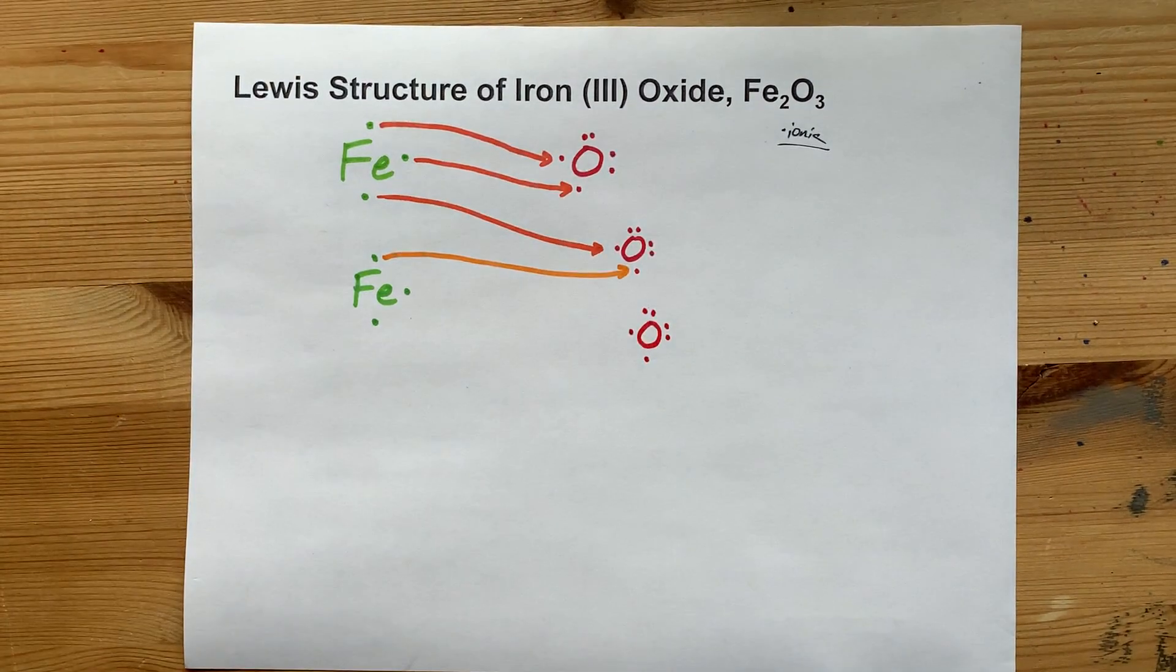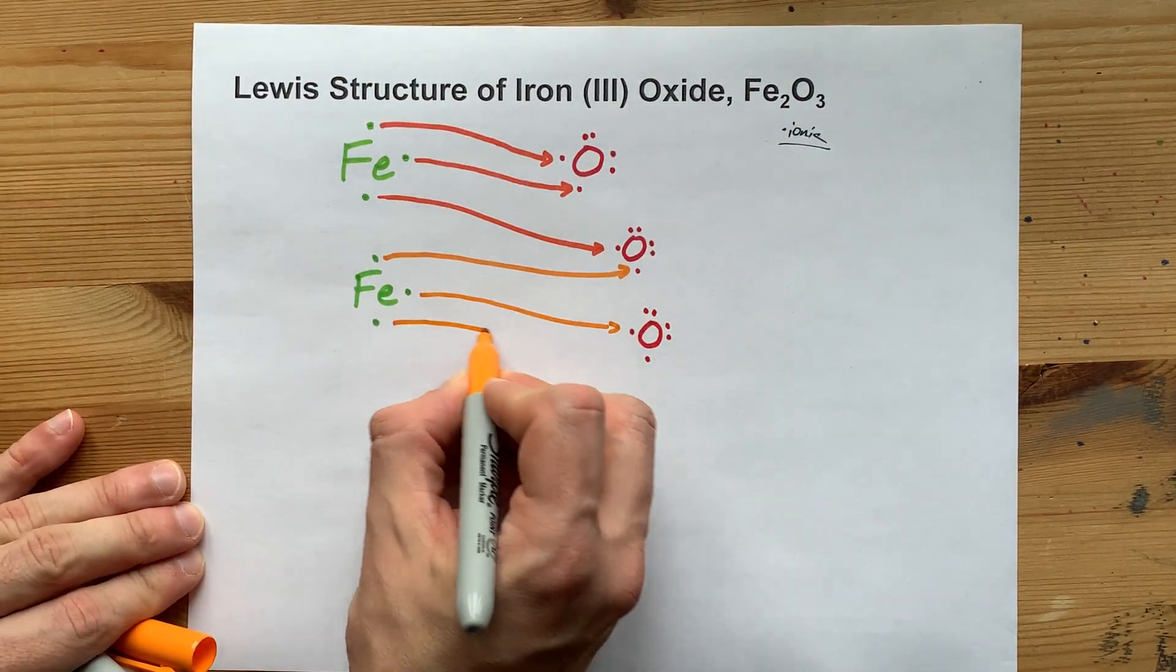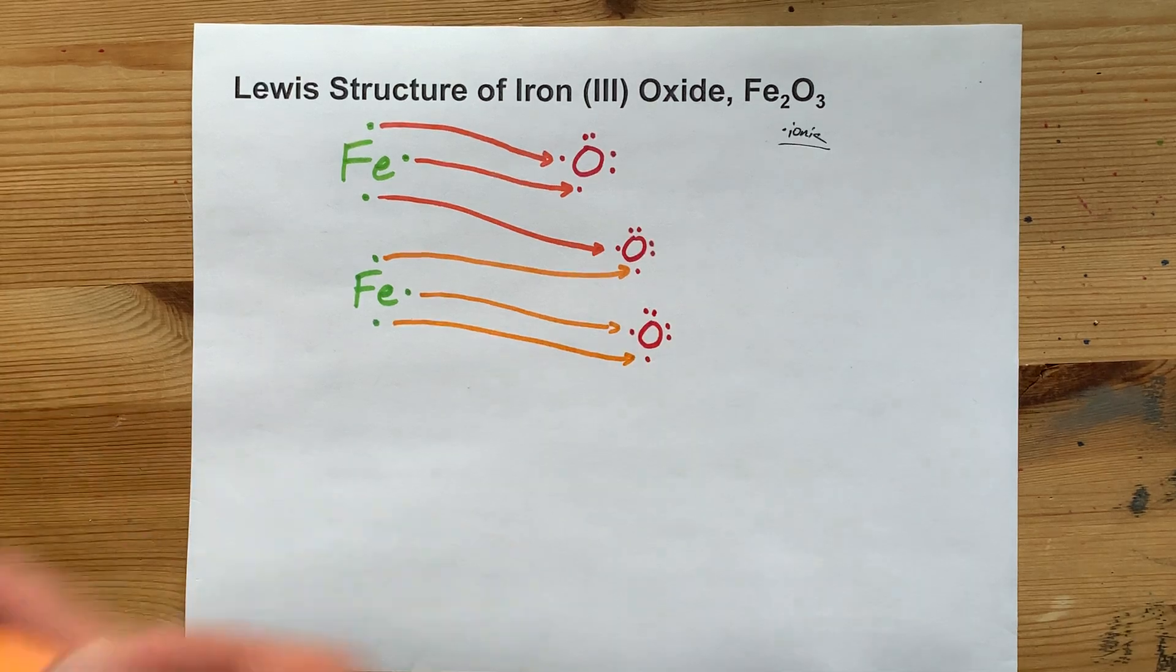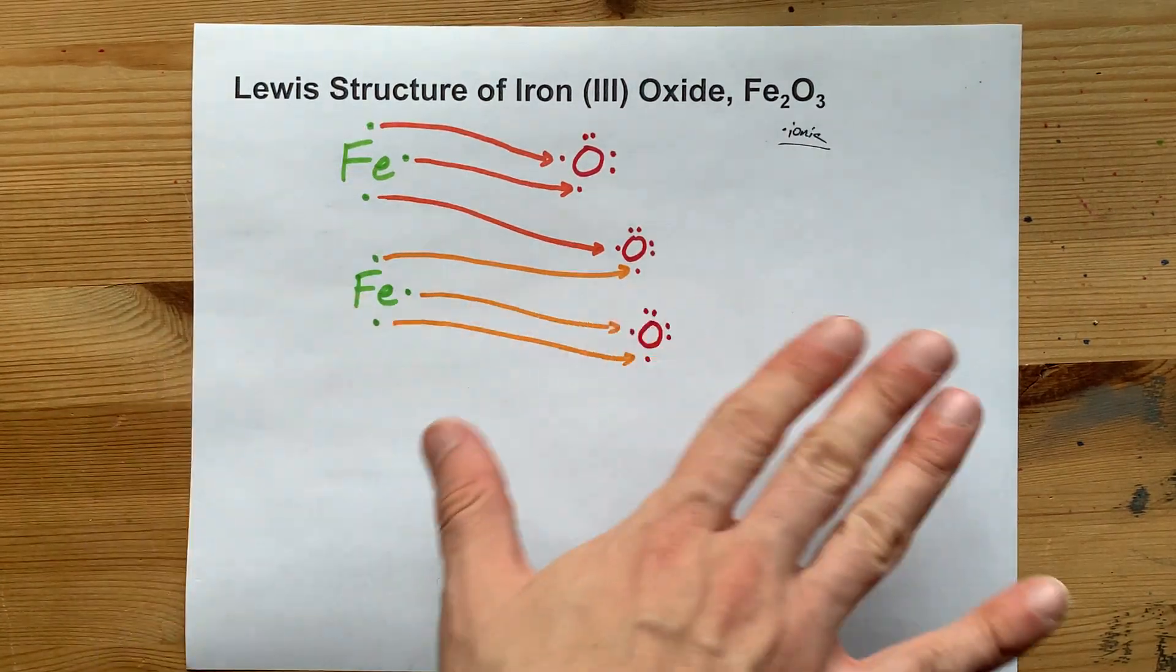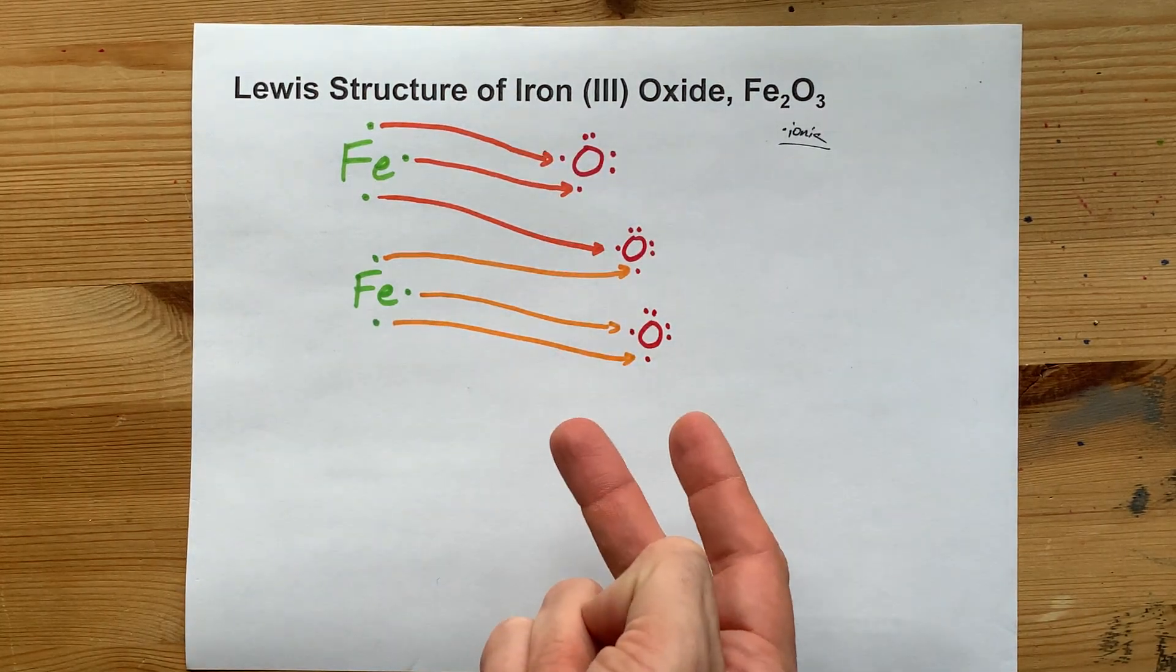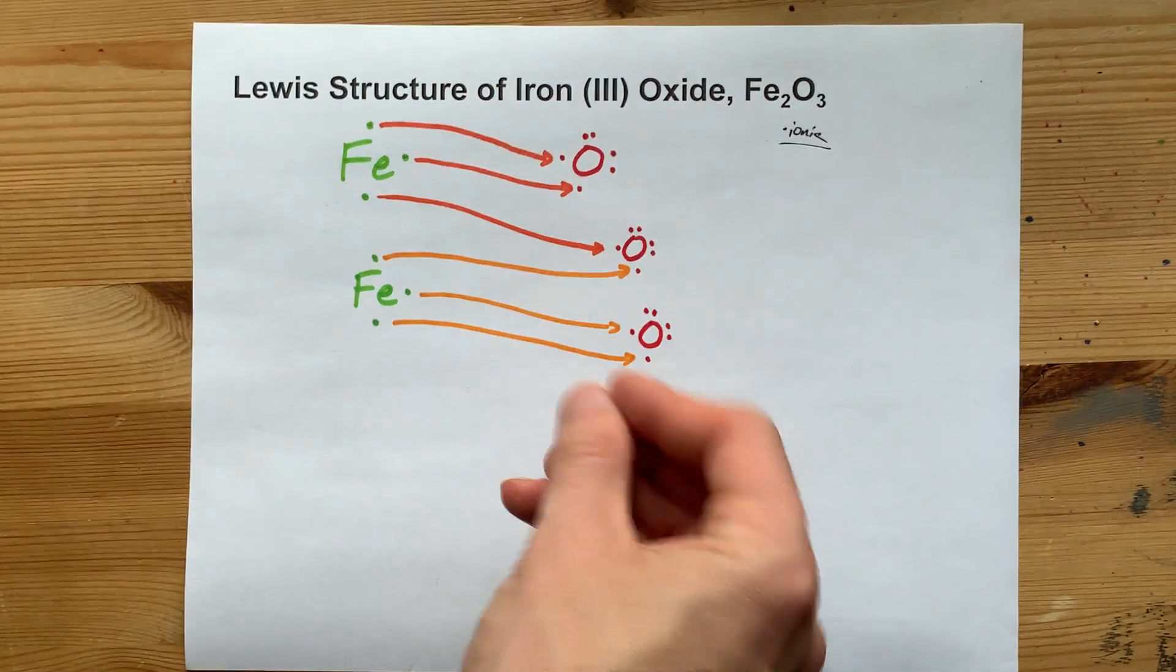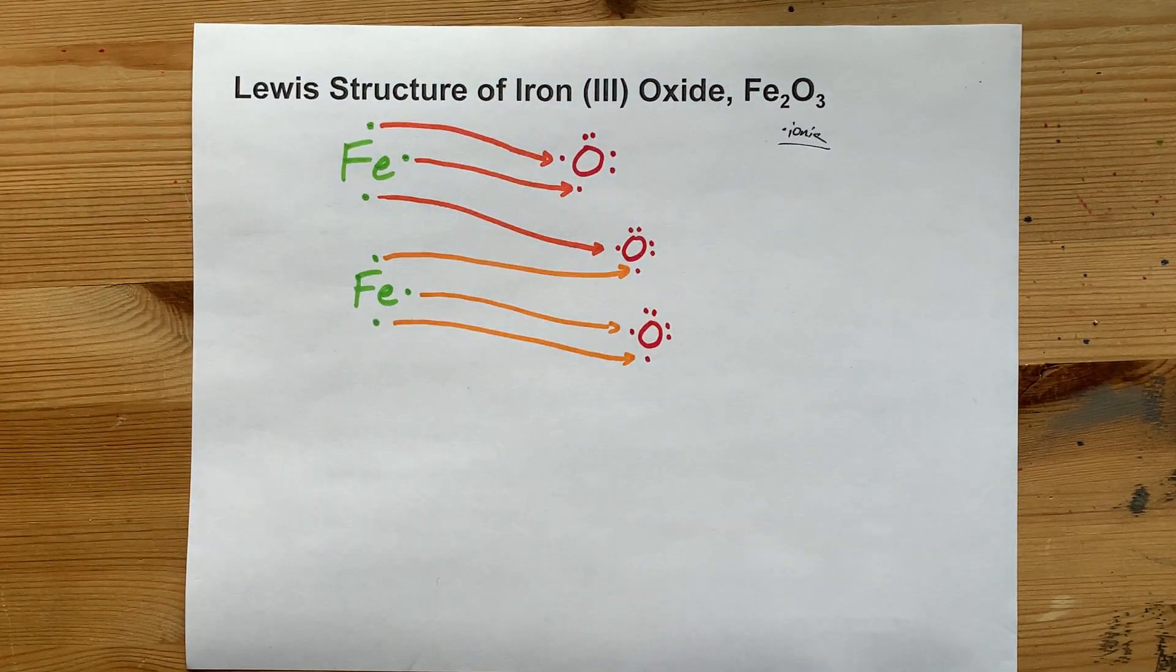But the addition of 1 more oxygen will provide a place for those to go. So, those 2 extra electrons from iron go to that oxygen. Now, all the irons have given away all their electrons, and all the oxygens have gained 2 each. That makes it 8 valence electrons, or a full octet for those.